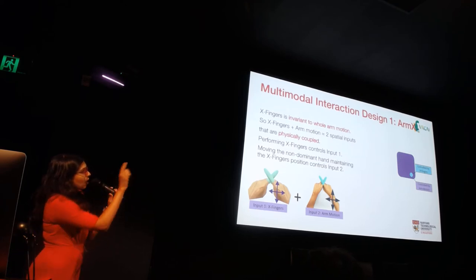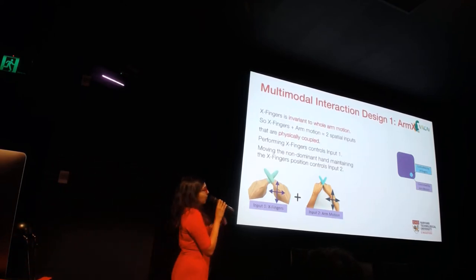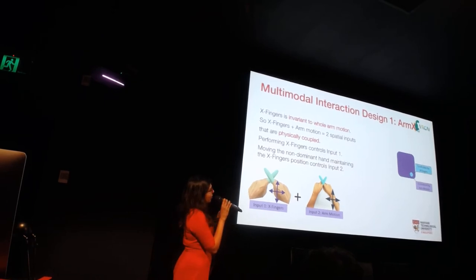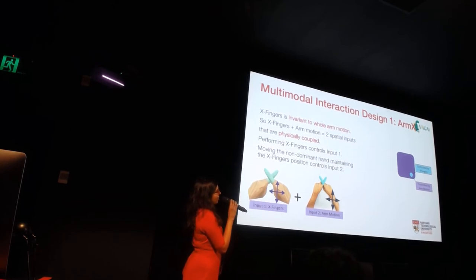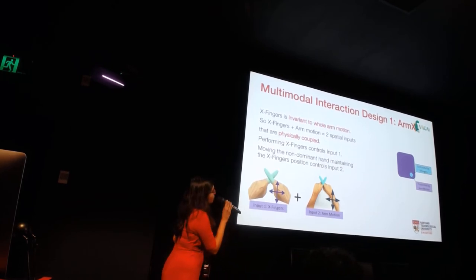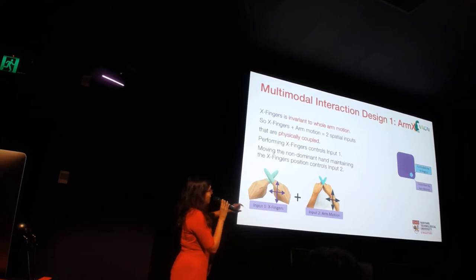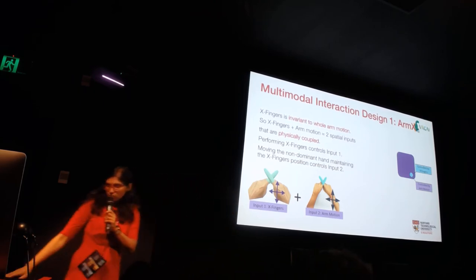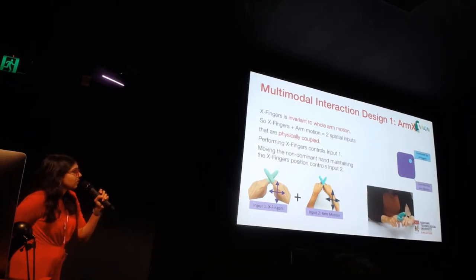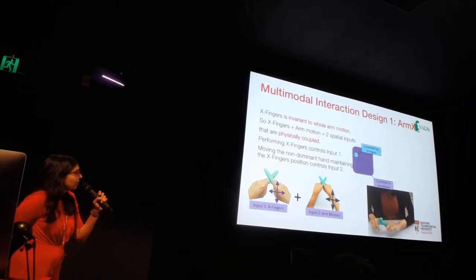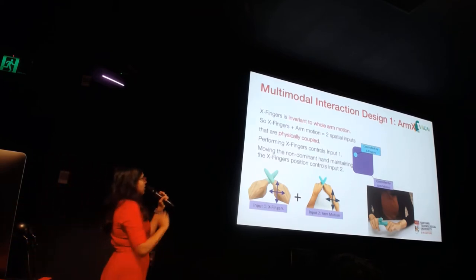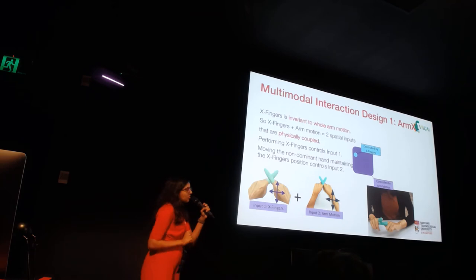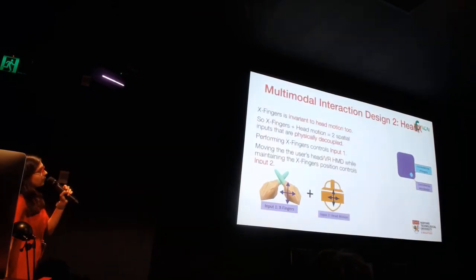With AMIX, you can control two simultaneous objects. For example, in this evaluation spin-off, there's a purple square and within it a smaller blue circle. The blue circle is controlled by the movement of X fingers, and the purple square is controlled by moving the entire arm, keeping X fingers wherever it is. So basically, moving the arm controls the big square and moving the fingers controls the circle. That is ArmX.